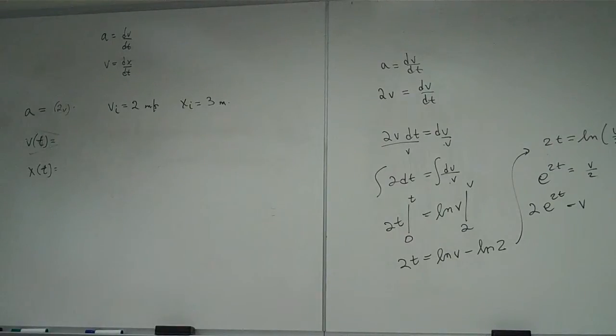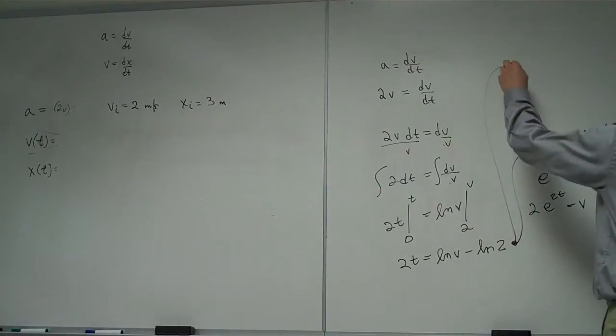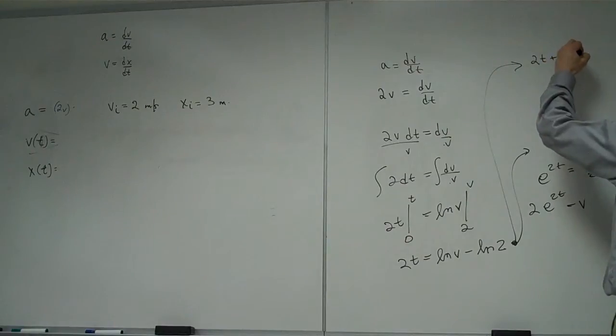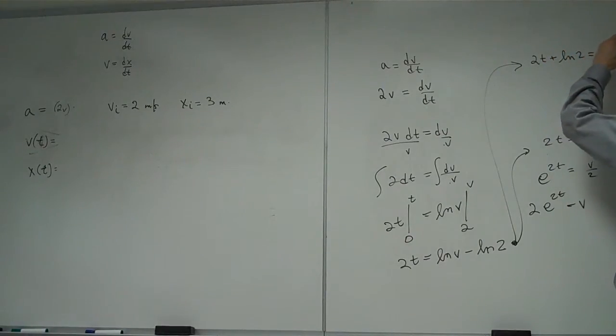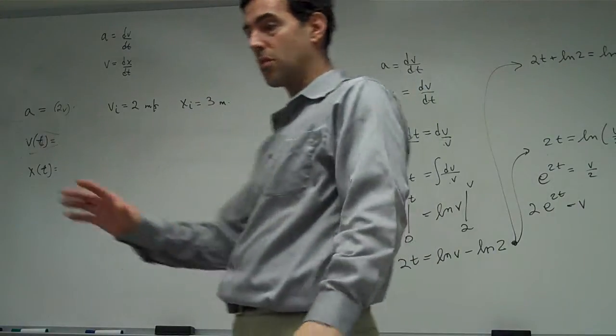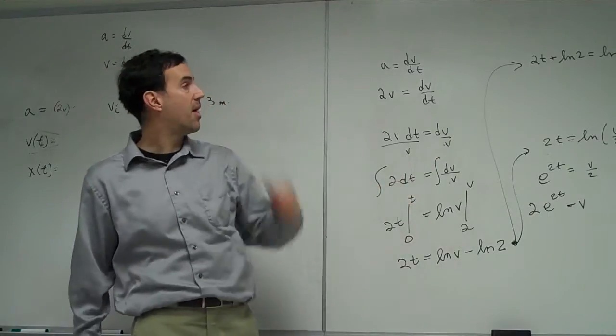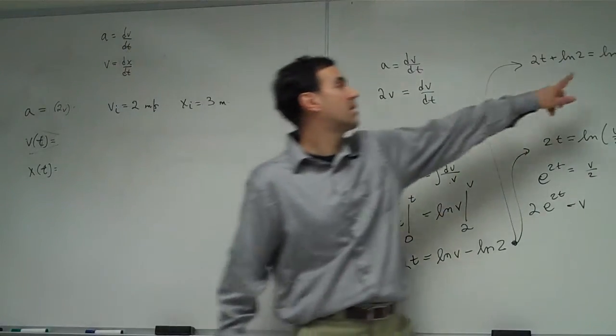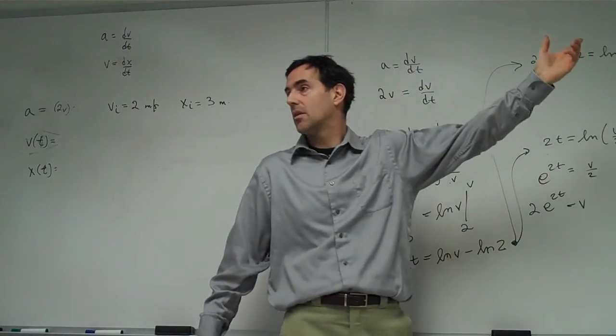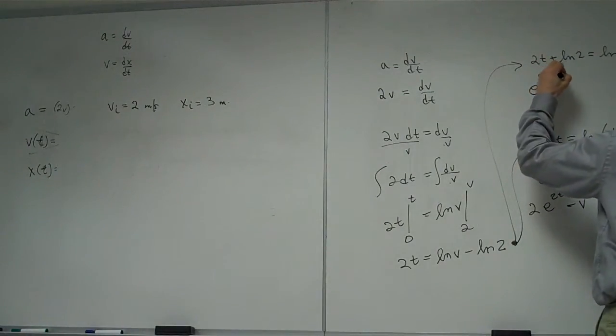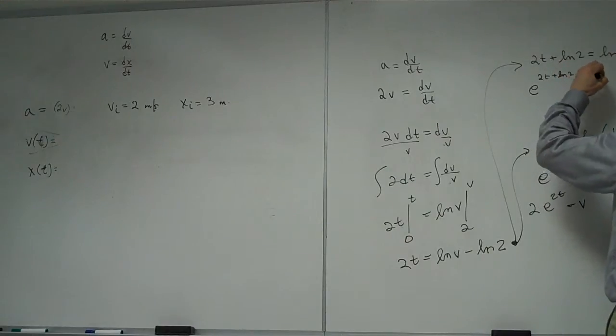James made a math suggestion. Let's look at it. James suggested, could at this step we instead have done 2t plus ln(2) equals ln(v)? Sure. That would have been okay. Let's move the ln(2) over to here. And then, to get v by itself, what should I do to both sides? E. So I have to do e to the 2t plus ln(2) equals v.